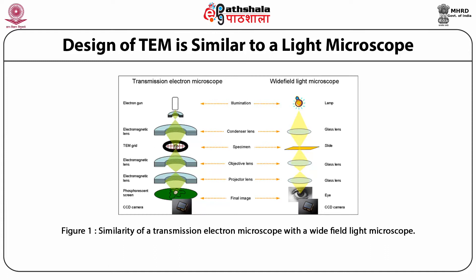The specimen in TEM is the TEM grid, which is equivalent to a slide in a wide-field light microscope. The objective lens in TEM is the electromagnetic lens, whereas it is the glass lens in a wide-field light microscope. Similarly, the projector lens is the electromagnetic lens in TEM and a glass lens in the wide-field light microscope. The final image is made on a phosphorescent screen in TEM, whereas it is detected by the eye in a wide-field light microscope.